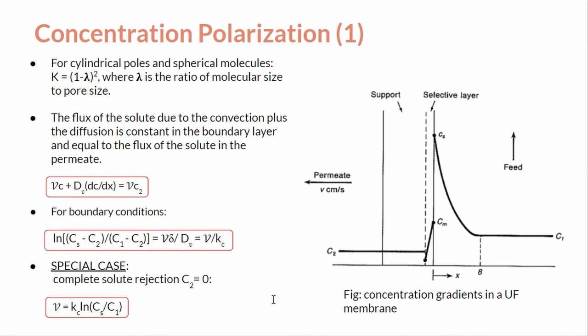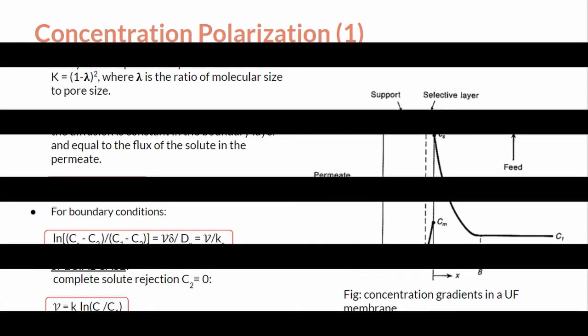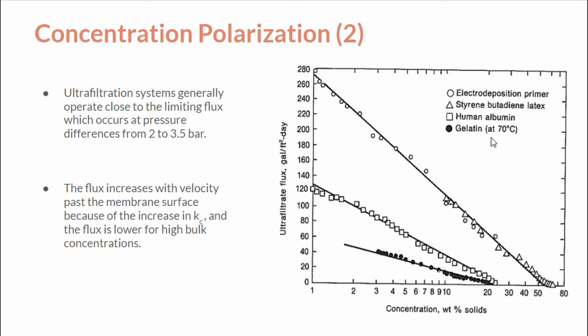A further sudden increase in Δp gives a temporary increase in permeate flow, but this decreases to a maximum steady state flux as the gel layer becomes thicker and increases hydraulic resistance. Ultrafiltration systems generally operate close to the limiting flux, which occurs at pressure differences from 2 bar to 3.5 bar. The change in flux with concentration is shown in the figure, and semi-log plots of this type can be extrapolated to zero flux to determine the value of Cg. The gel concentration ranges from 10% to 50% weight for various proteins and is about 70 weight percent for latex suspensions. The flux increases with velocity B past the membrane surface because of the increase in value of Kc, and the flux is lower for high bulk concentrations.